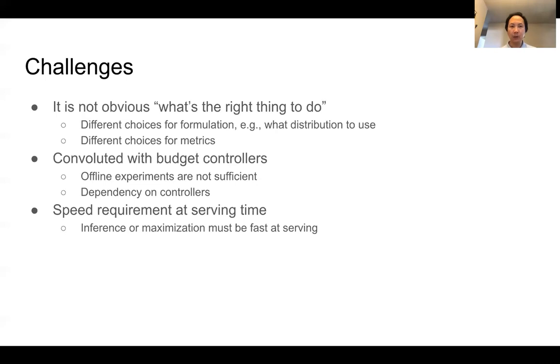And last, as we pointed out before, the choice of the model is limited because at serving time, the inference time must be fast because we need to run the inference multiple times. And we are currently working on more complex models like neural network prediction models. However, the speed issue is something we must handle.